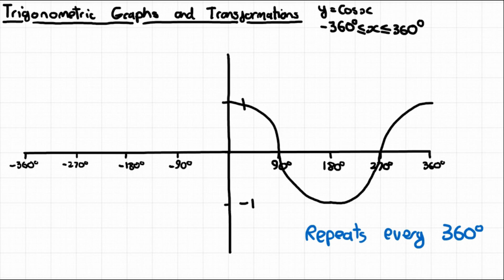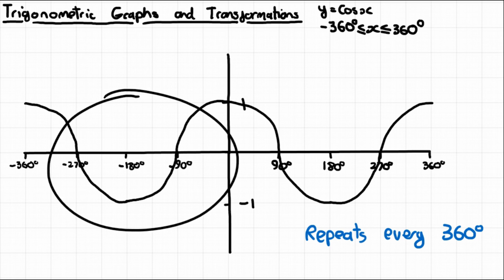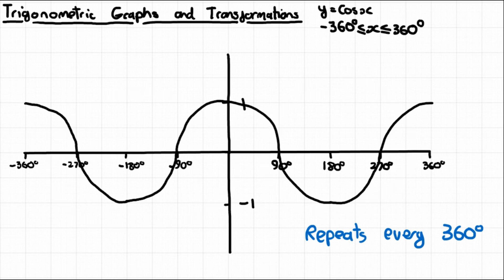If you need to sketch negative degrees for cos, just follow the line — it's actually a mirror in the y-axis. It goes down to 0 at -90 degrees, down to -1 at -180, back up to 0 at -270, and up to 1 at -360. Again, it's just a copy and paste over every 360-degree period.